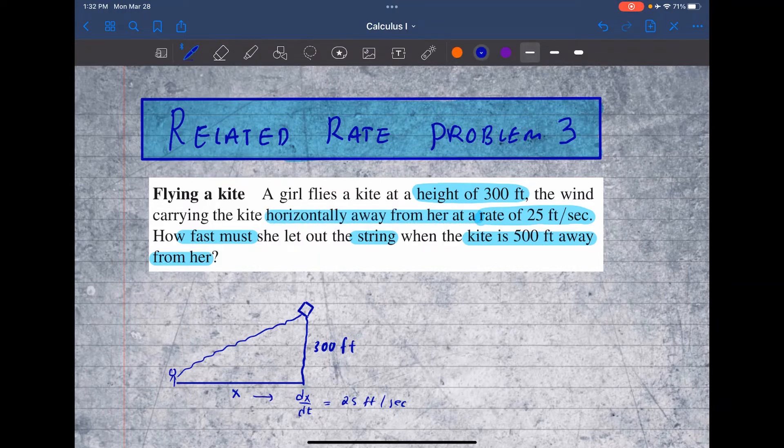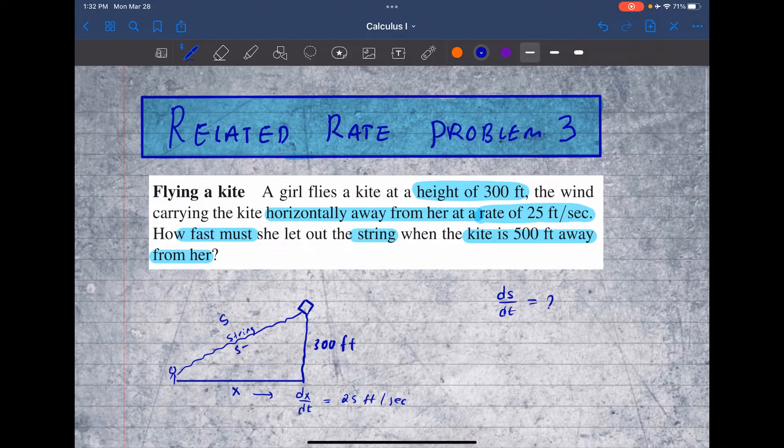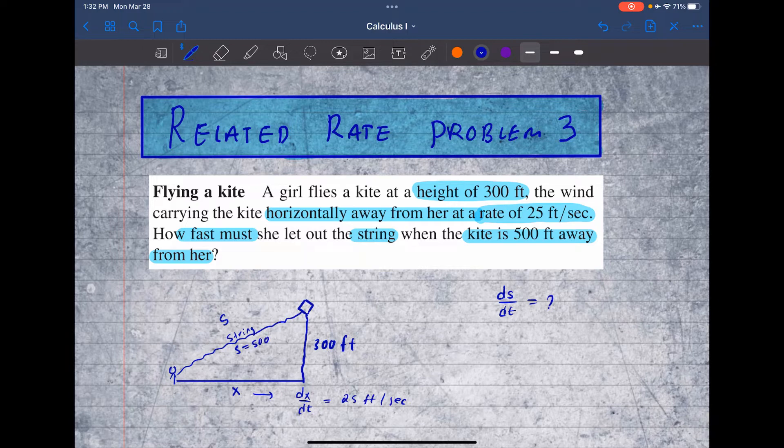And I'm letting s represent the distance from her to the kite. And we want to know how fast must she let go of the string. So if this is the string, let's call it s for string, how fast. So that means we're looking for ds/dt when the kite is 500 feet away from her. So s happens to be 500 feet.